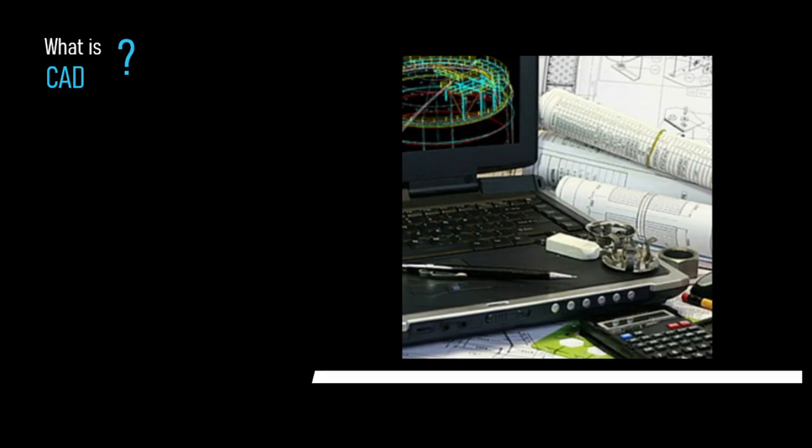So what is CAD? During manual drafting, you utilize many tools. Examples of those tools include the drafting table, T-squares, triangles, drafting paper, mechanical pencil, tech pen, and compass. All of those tools are incorporated and recreated by CAD through the use of a computer and a given software.